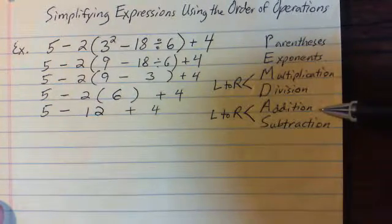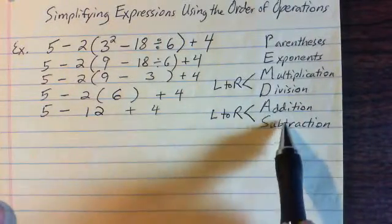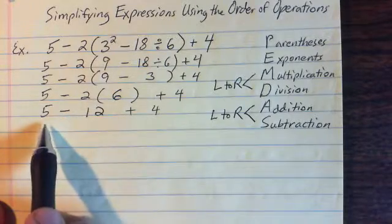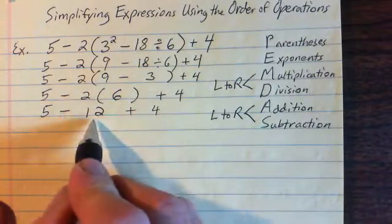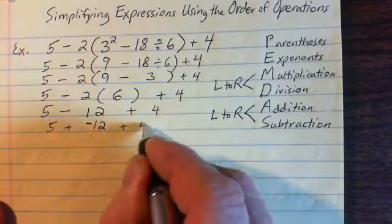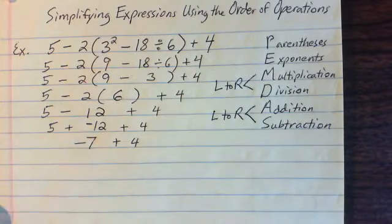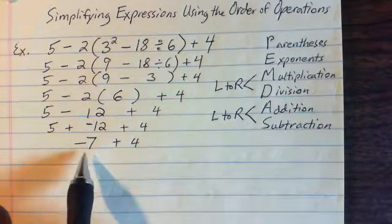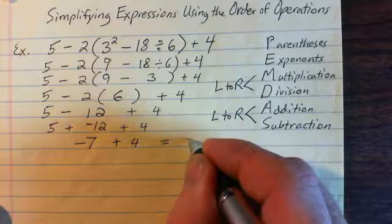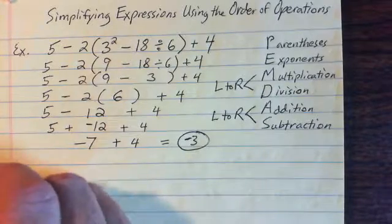Should I do the subtraction or the addition? Addition and subtraction are equal in status, so the left-to-right rule applies. The subtraction comes first from left to right, so I do 5 minus 12 first. You can think of it as 5 plus negative 12 — either way, 5 and negative 12 makes negative 7. Then negative 7 plus positive 4 equals negative 3.